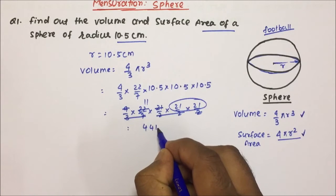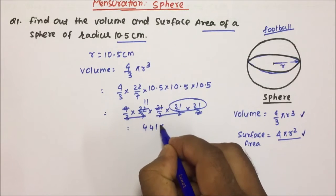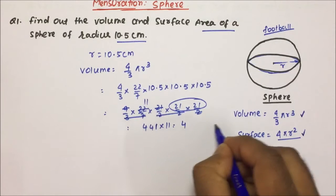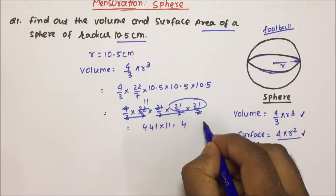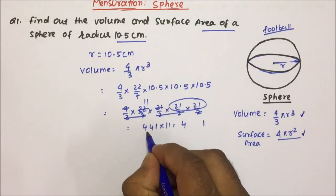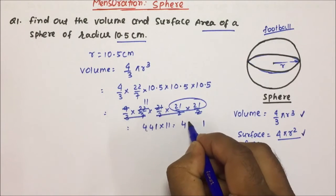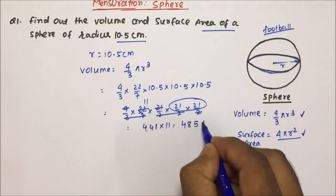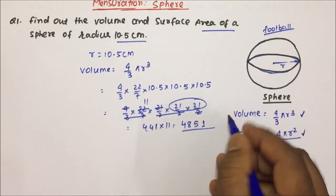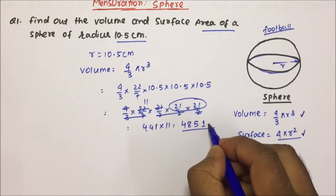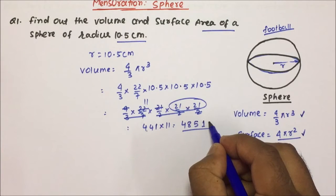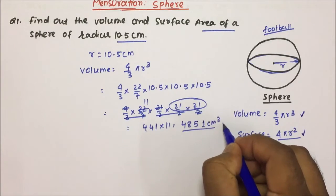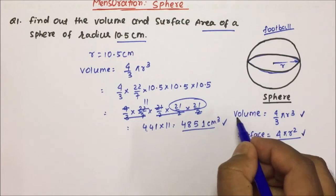It will be 441 into 11 into 11. So this will be 4 and this will be 1. 4 plus 4 will be 8 and 4 plus 1 will be 5. So 4851 centimeter cube will be the volume of the sphere.